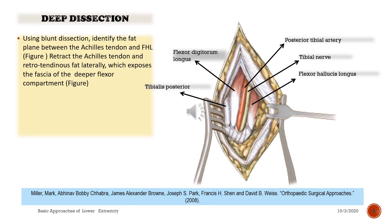Deep dissection: using blunt dissection, identify the fat plane between the Achilles tendon and FHL. Retract the Achilles tendon and FHL, which exposes the fascia of the deeper flexor compartment.